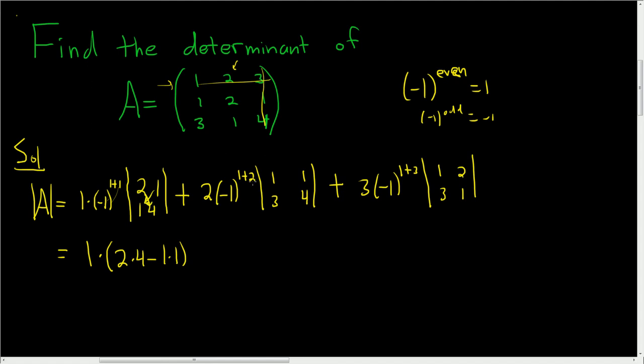1 plus 2 is 3. That's odd. So it's going to be negative 1. So we're going to get a negative 2. And then it's 1 times 4 minus 1 times 3. And then here 1 plus 3 is 4. That's even. So it's going to be positive. So plus 3. And then 1 times 1 minus 2 times 3.